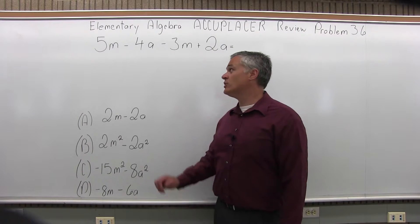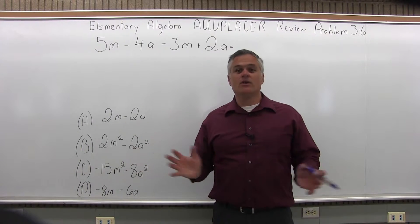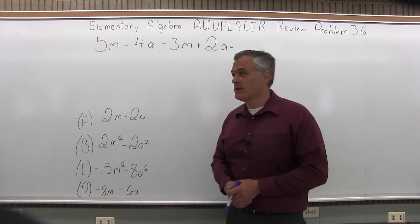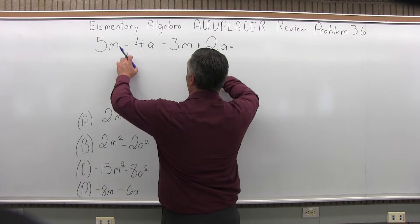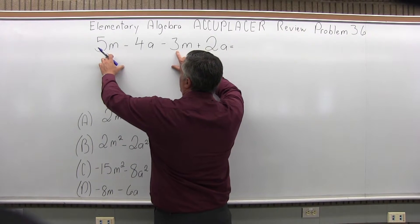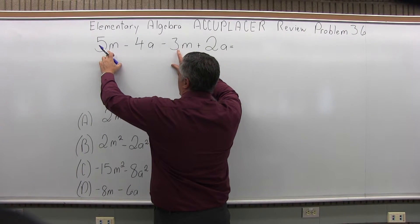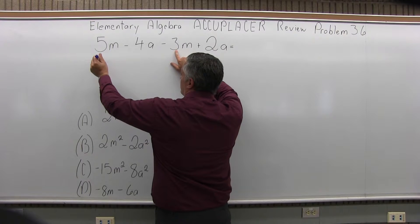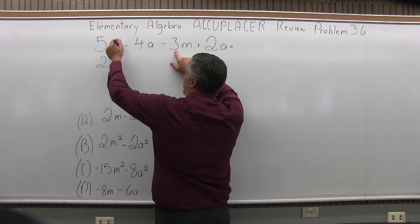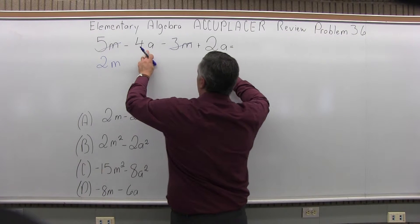You can't mix m's and a's when you're adding or subtracting. If you're multiplying, you could mix them all together. But since we're not multiplying and we're adding and subtracting, first put together the m's. I have positive 5m and negative 3m, so positive 5 minus 3 is going to give me positive 2m. That takes care of the m's.